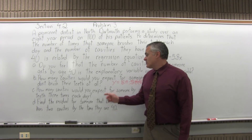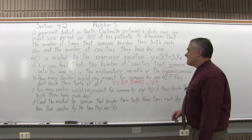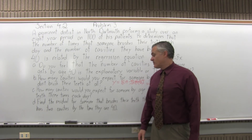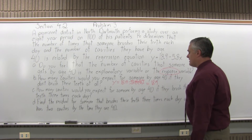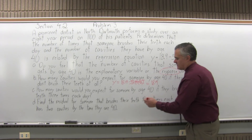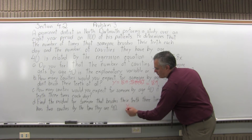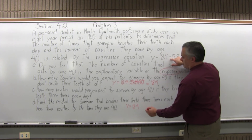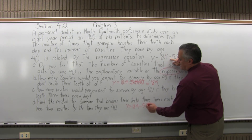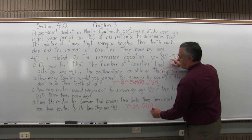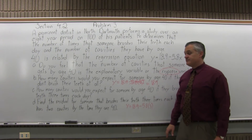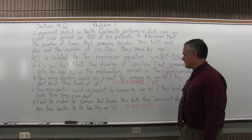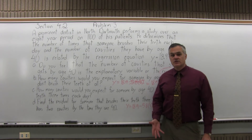Part C: how many cavities would you expect for someone by age 40 if they brush their teeth three times each day? Now three goes in for x. The equation y equals 18.9 minus 5.8 times x becomes 5.8 times three, because the question says three times — that's why x is three.